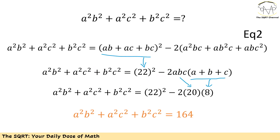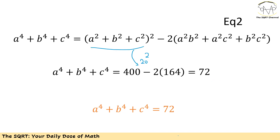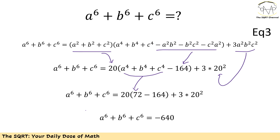Back to what we wanted to find. For a to the power of 6 plus b to the power of 6 plus c to the power of 6, I need a squared b squared plus a squared c squared plus b squared c squared. Using identity 2 with the values I found, after some algebraic simplification this equals 164. I also need a to the power of 4 plus b to the power of 4 plus c to the power of 4, which using the values already found gives 72.